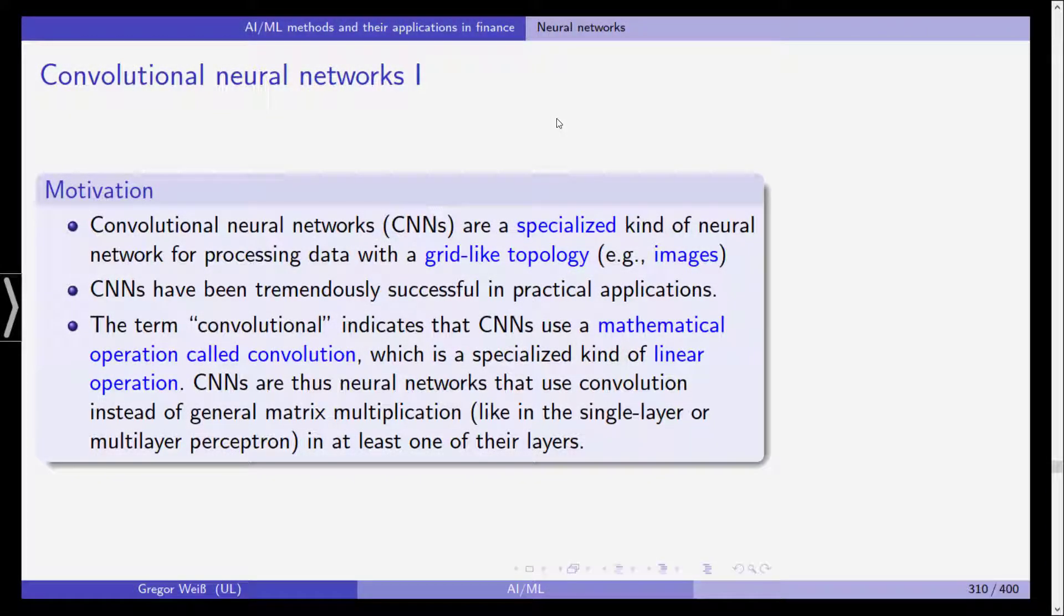Hello everyone, welcome back to our class in Artificial Intelligence and Machine Learning in Finance. In this short video, we are going to have a look at convolutional neural networks, which are a specialized kind of neural networks of the single and multilayer perceptron we've already seen, and they are used for processing data with a grid-like topology, very famously used for images.